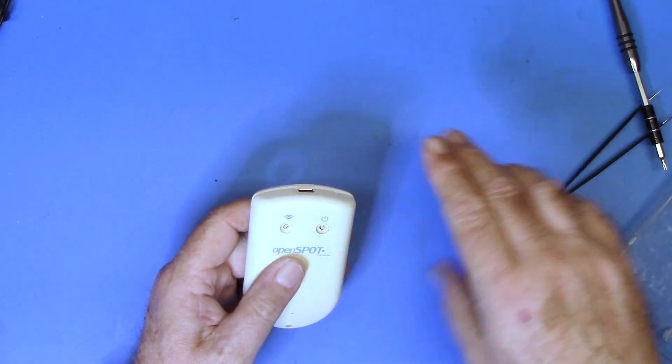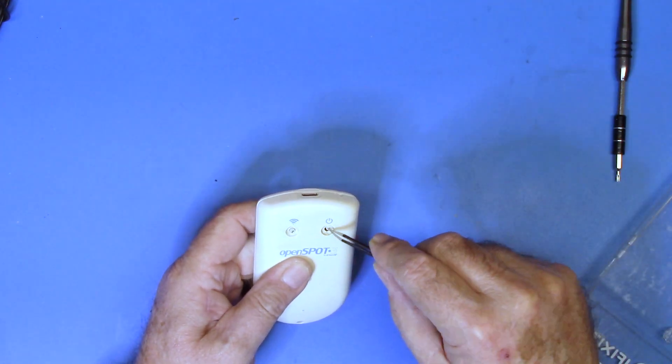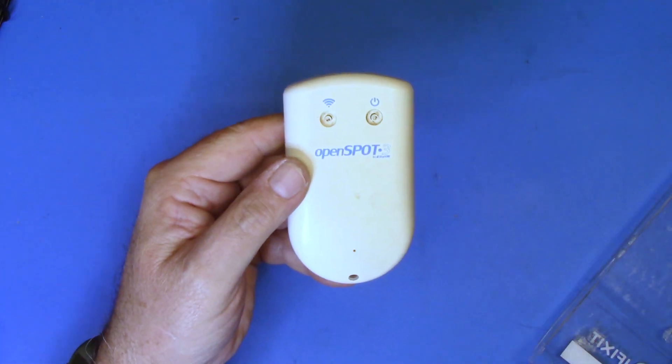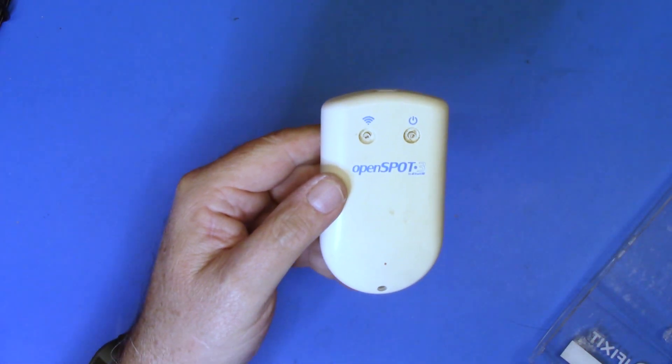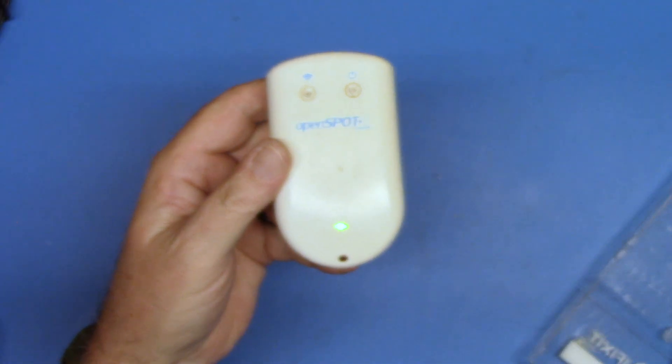Now we just need to line up our buttons again and snap her home. And there we go. We now have a fully functional OpenSpot with a new battery.